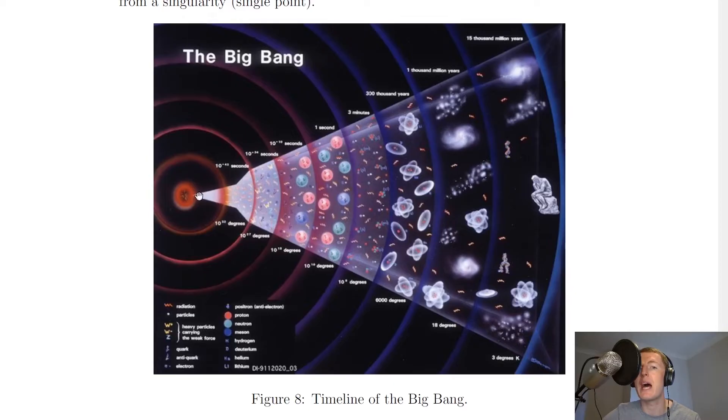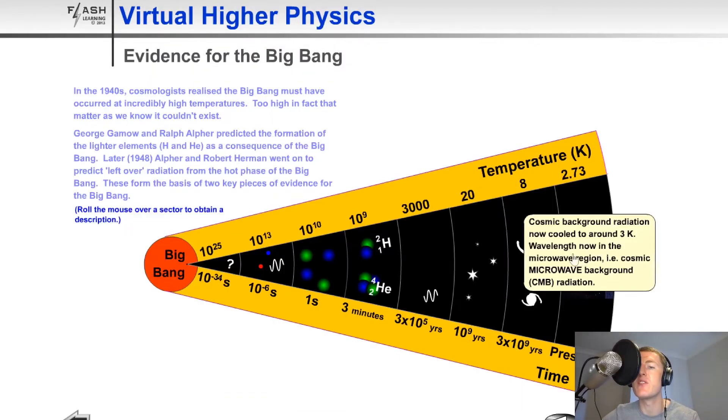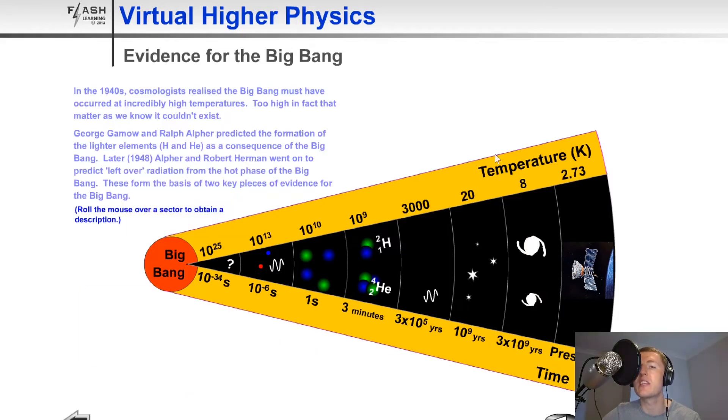So this picture represents what's happening over time. We're going from the point of the Big Bang over here to the present day. And I'm just going to take you through each part of that in an animation. We've got temperature in Kelvin on the top, and we've got time along the bottom.